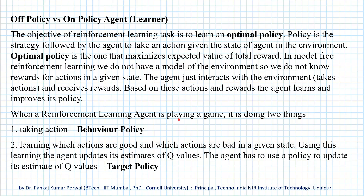When a reinforcement learning agent is playing a game, it is doing two things. First, it is taking actions in different states, and the policy that determines the actions of our agent is called the behavior policy — it determines how our agent will behave in a given state. Second, the agent is learning which actions are good and which are bad in a given state. Using this learning, the agent updates its estimates of Q values, that is, action values for all the state-action pairs. The policy the agent uses to update its Q value estimates is called the target policy — the policy our agent uses to learn from its actions and the rewards it receives.